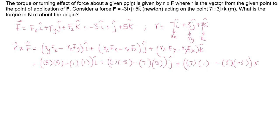So here I can simplify it: 15 - 1 plus (-3 - 35)j plus (7 + 9)k. So this will become basically torque equals r cross F = 14i - 38j